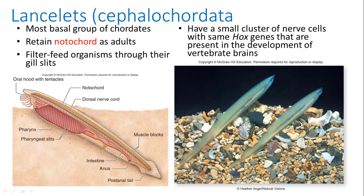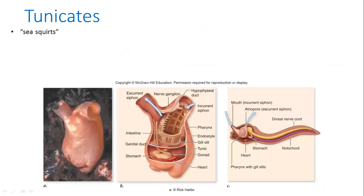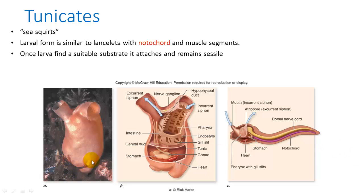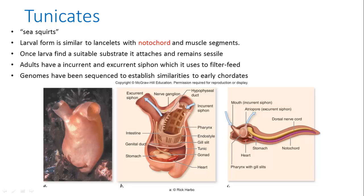This is a basal group for chordates and has characteristics which are more developed and complex in other vertebrates. Tunicates are our other invertebrate group, also called Urochordata. They are often called sea squirts because they have an in-current and ex-current siphon — that's how they filter feed. Their larval form has a notochord and looks similar to the lancelets, but they become sessile, attaching to a substrate and losing many characteristics. Their genomes have been sequenced, making them a valuable research organism in genetics to establish early chordate relationships.